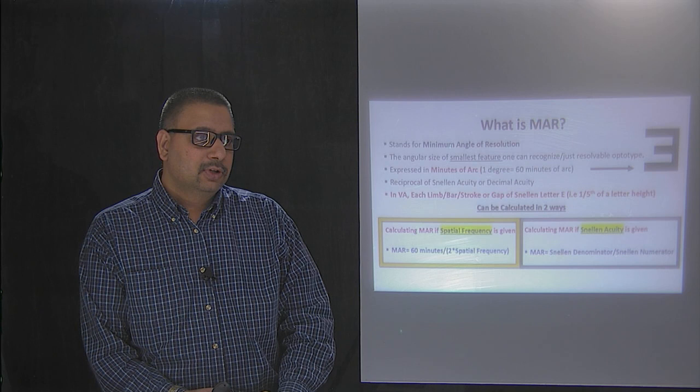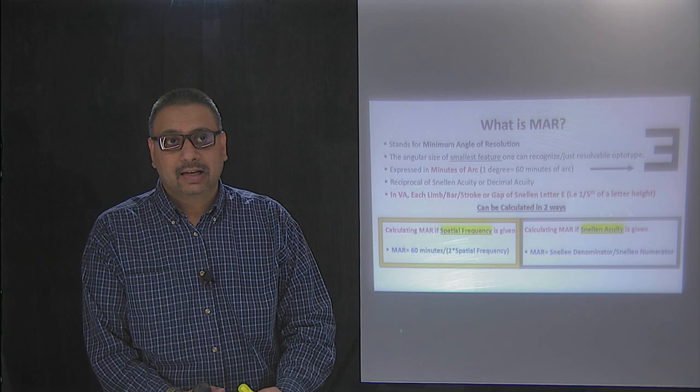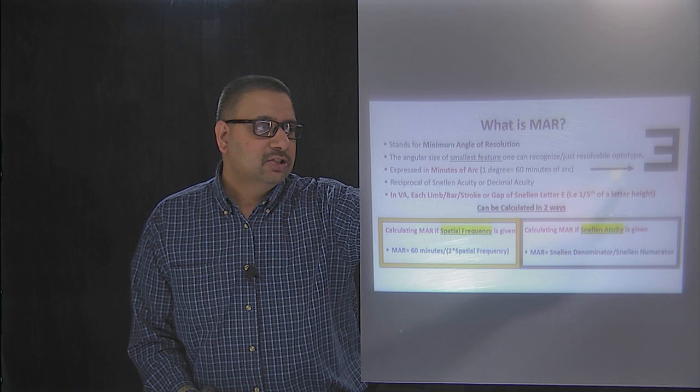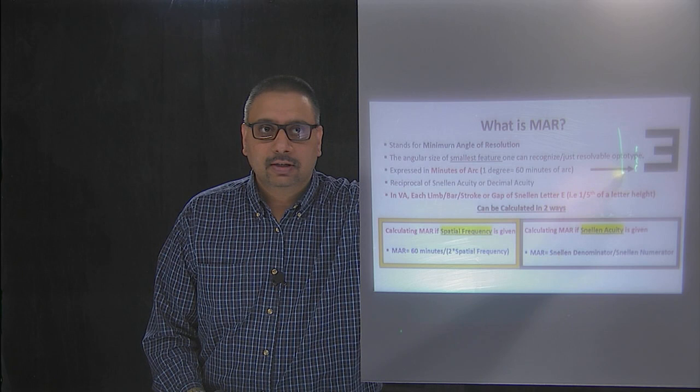MAR is typically expressed in minutes of arc. One degree is divided into 60 minutes. A Snellen 20/20 letter, at 20 feet, subtends one minute of arc. If you look at this inverted E, each limb, stroke, or gap is equivalent to one minute of arc. So each of these gaps are equivalent to one minute of arc.